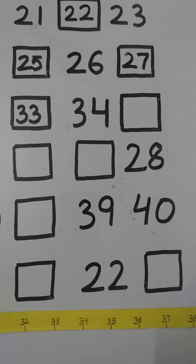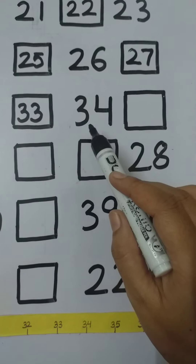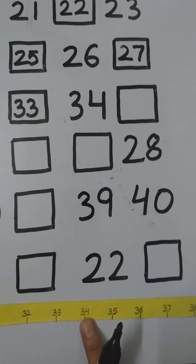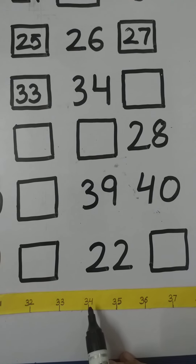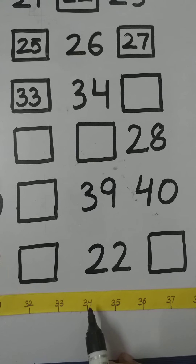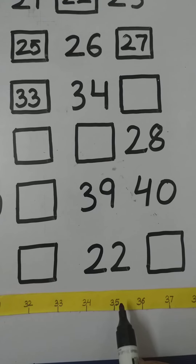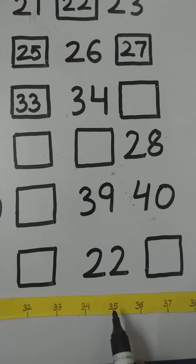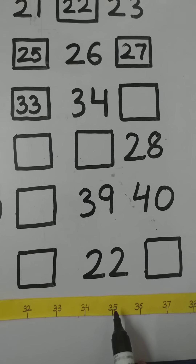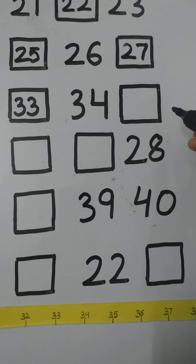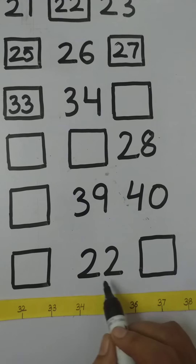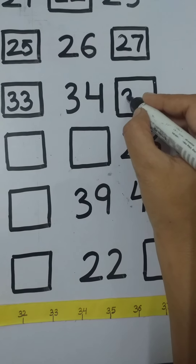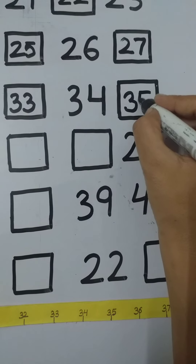Now tell me what comes after 34? We have to move towards the right hand side. So 35. What comes after 34? 35. So we have to write here 35.